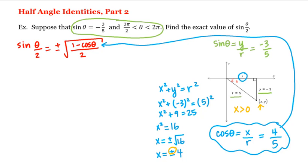There's one more issue with this formula — what does this plus or minus mean? Does that mean there are two solutions? No. We're going to choose either the positive or the negative depending upon the quadrant that theta over two lies in. If sine of theta over two in that quadrant is positive, we choose positive; if it's negative, we choose negative.